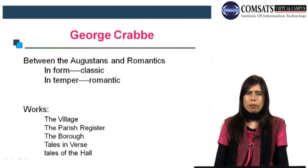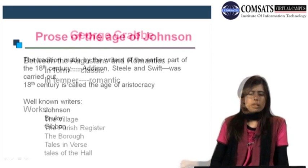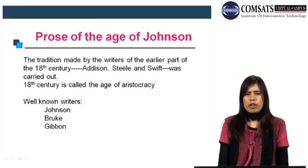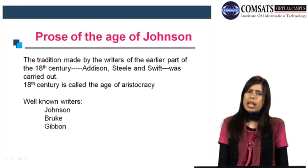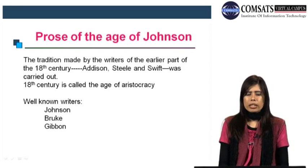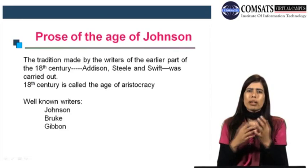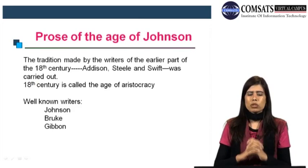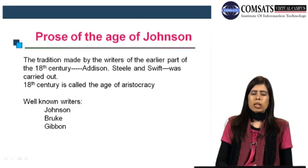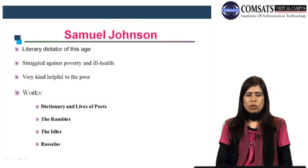We are now moving towards prose. The tradition made by the writers of the earlier part of the 18th century — Addison, Steele, and Swift — was carried on in the later half of the 18th century, which is the Age of Johnson. The 18th century is called the age of aristocracy. The well-known writers of prose in the later half of the 18th century are Johnson, Burke, and Gibbon.